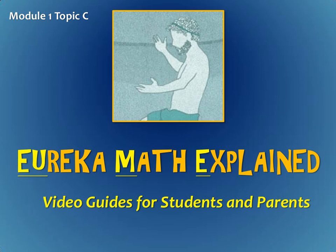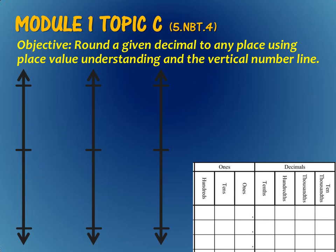In today's UMI, we are going to work with rounding numbers using a vertical number line. Our objective today will be to round a given decimal to any place using place value understanding and the vertical number line. We will be using our vertical number lines that you see here, and decomposing numbers using the place value chart that you see at the bottom of the page.